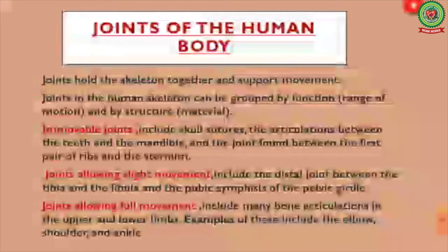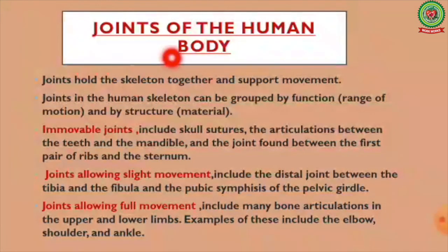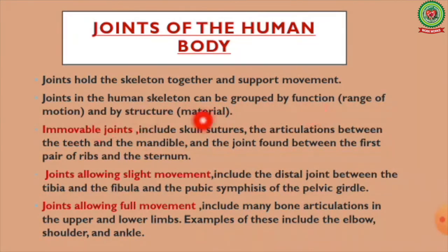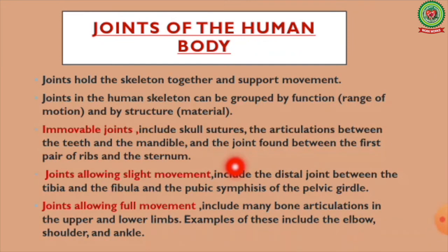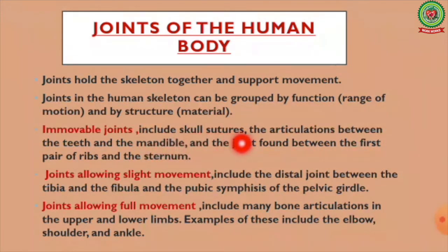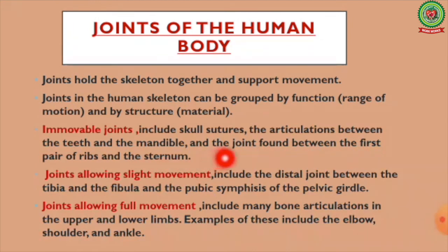Moving on to joints of the human body: joints hold the skeleton together and support movement. Joints in the human skeleton can be grouped by function, range of motion, and by structure. According to range of motion, joints can be divided into three types. First, immovable joints — joints that allow no movement — include skull sutures, the articulation between the teeth and the mandible, and the joint between the first pair of ribs and the sternum.